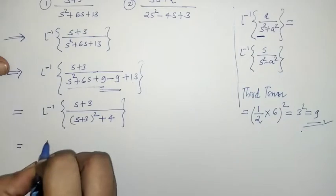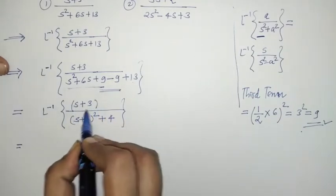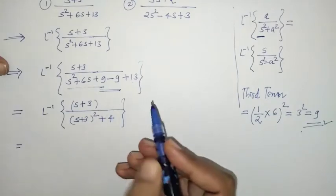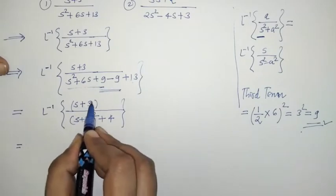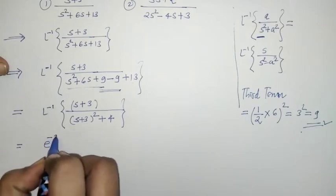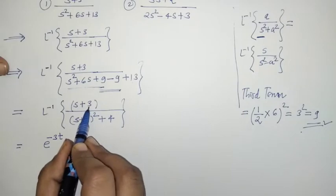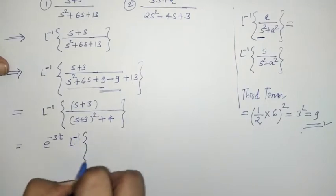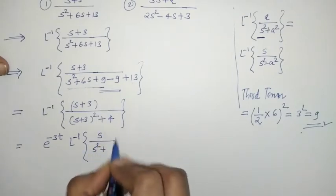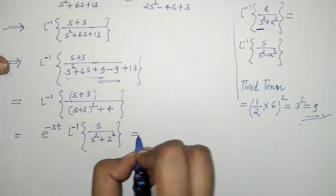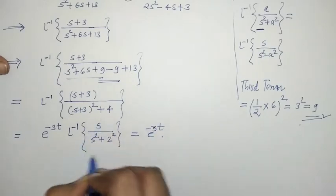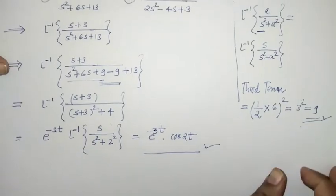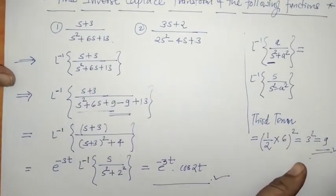Now, in the numerator we have (s + 3) and the denominator has (s + 3)² + 4, so we can apply the first shifting property of inverse Laplace transform. Taking the (s + 3) shift outside gives us e^(−3t), and the remaining L-inverse of s/(s² + 2²) gives cos(2t). So the required inverse Laplace transform is e^(−3t) cos(2t).